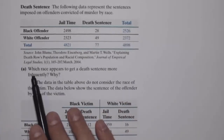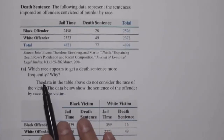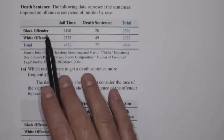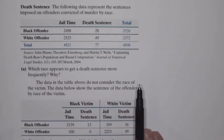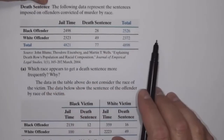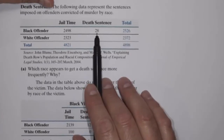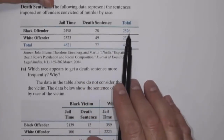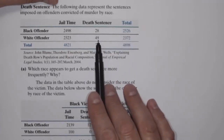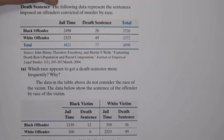Question A asks: which race appears to get a death sentence more frequently, and why? If we just take a look at this data, we can see that there were 28 black offenders given the death penalty out of 2,526, and there were 49 white offenders given the death penalty out of 2,372.